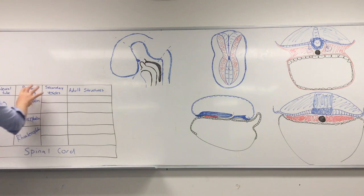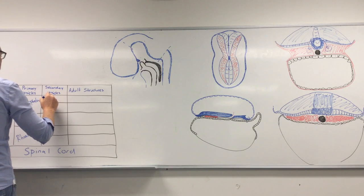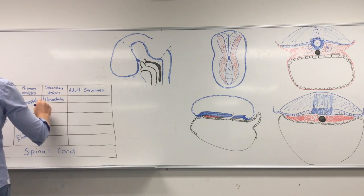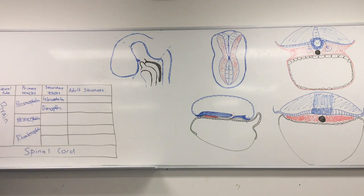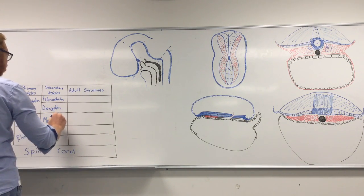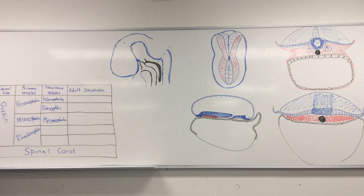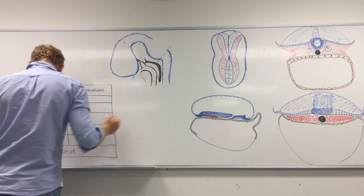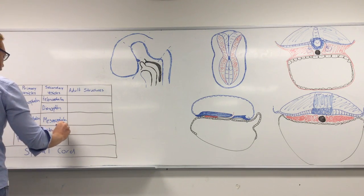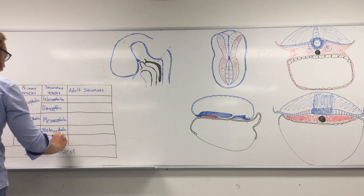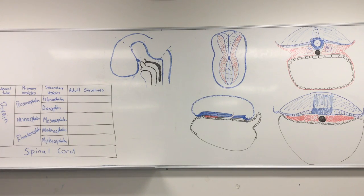The prosencephalon separates into two: the telencephalon and the diencephalon. The mesencephalon stays as the mesencephalon — 'meso' means middle, so you can work out it becomes the midbrain. And the rhombencephalon gives you the metencephalon and the myelencephalon. These are the final secondary vesicles that come out of this tube.